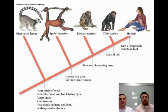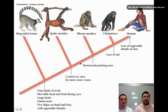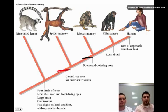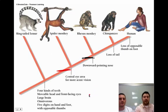Here's one more example: a primate cladogram, just to make sure you understand how to interpret these. Everything from a certain point up would have a downward-pointing nose — so the rhesus monkey, chimpanzee, and human. Everything from another point up on the cladogram would have a central eye area — all of those except lemurs, which have their eyes more on the side of their head.